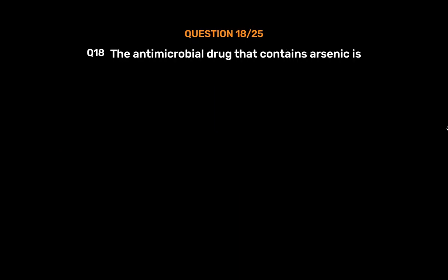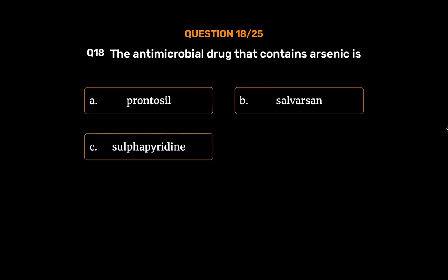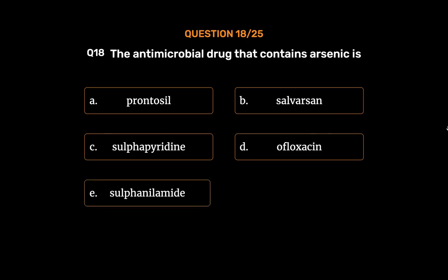Question number 18. The antimicrobial drug that contains arsenic is: Option A, prontosil; Option B, salvarsan; Option C, sulfapyridine; Option D, ofloxacin; Option E, sulfanilamide. The correct answer is Option B, salvarsan.